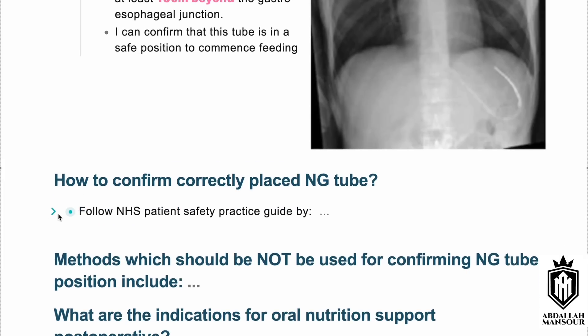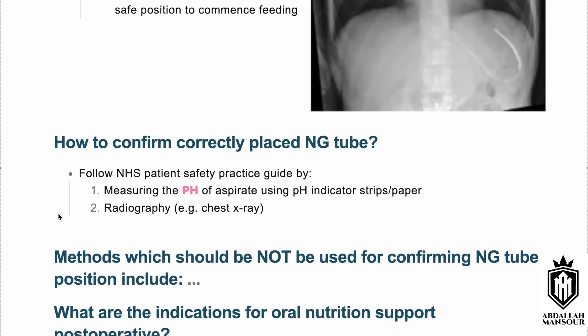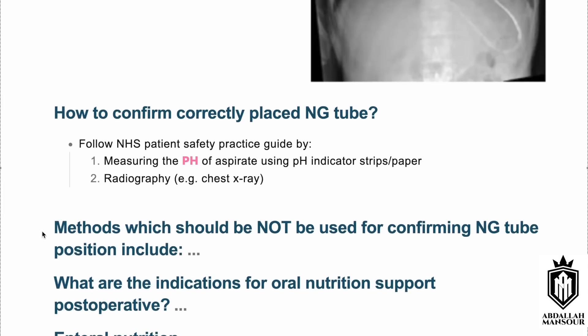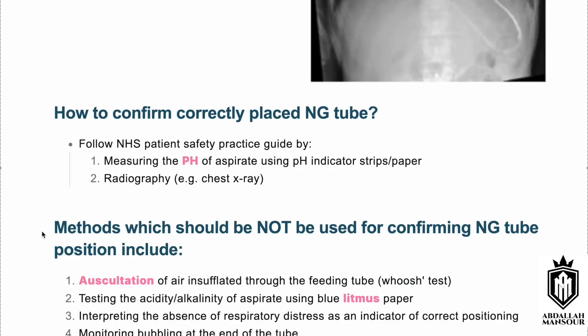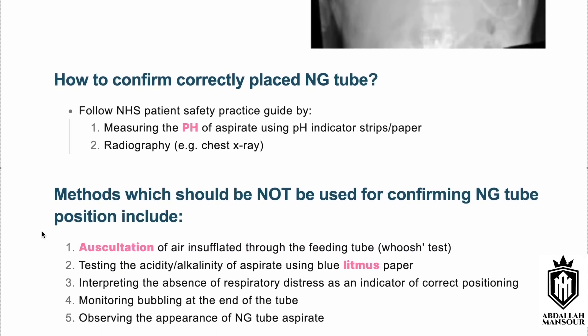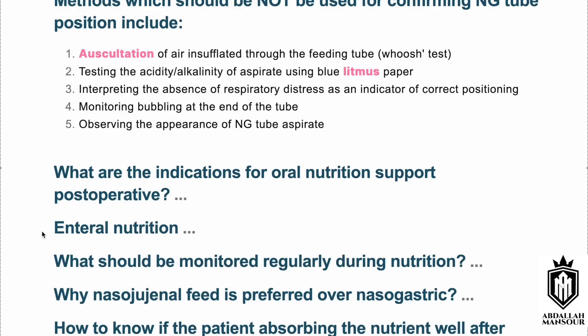There are multiple methods that should NOT be used in the NHS to identify correct NG tube location: do not use a stethoscope, do not look for gastric bubbles at the end of the tube, do not test acidity or alkalinity using litmus paper as it is inaccurate, and do not rely on observing the appearance of the aspirate. We avoid auscultation, litmus paper, bubbling, and observation — only objective measures such as aspirate pH and radiograph are acceptable.